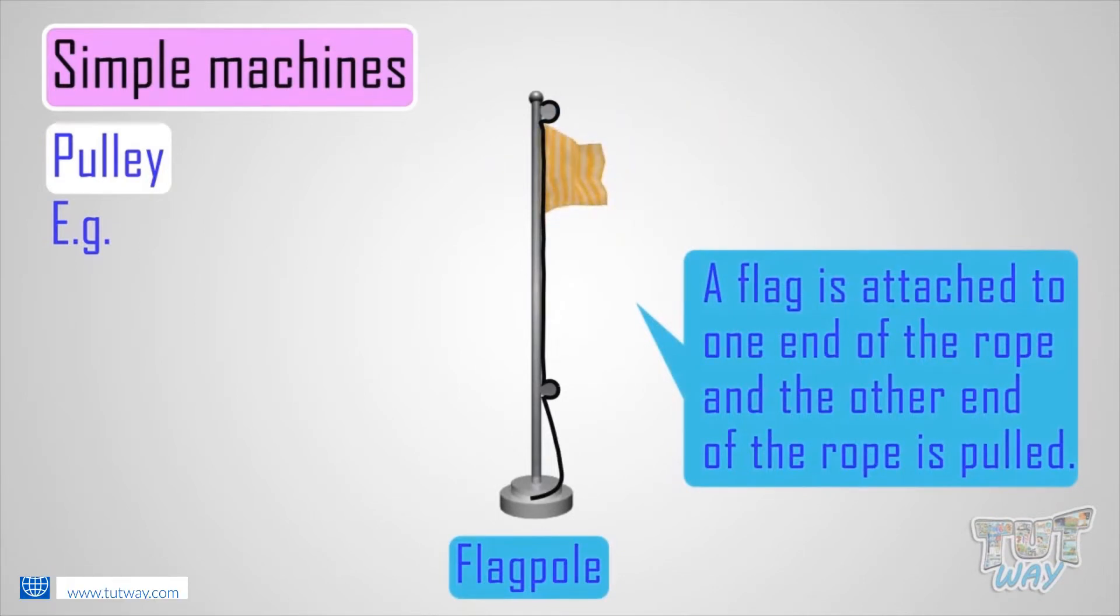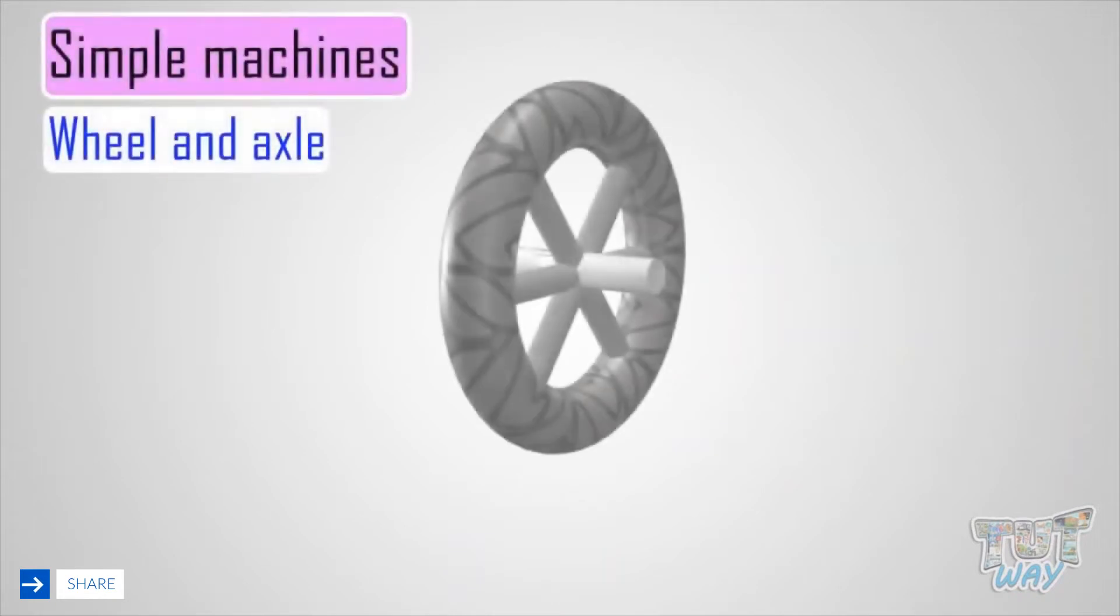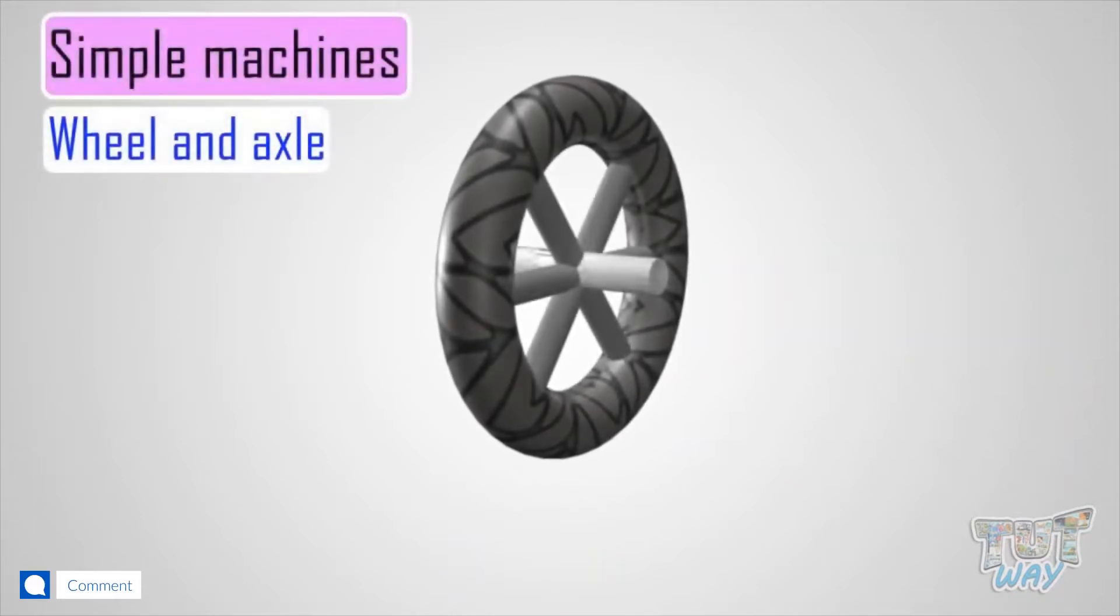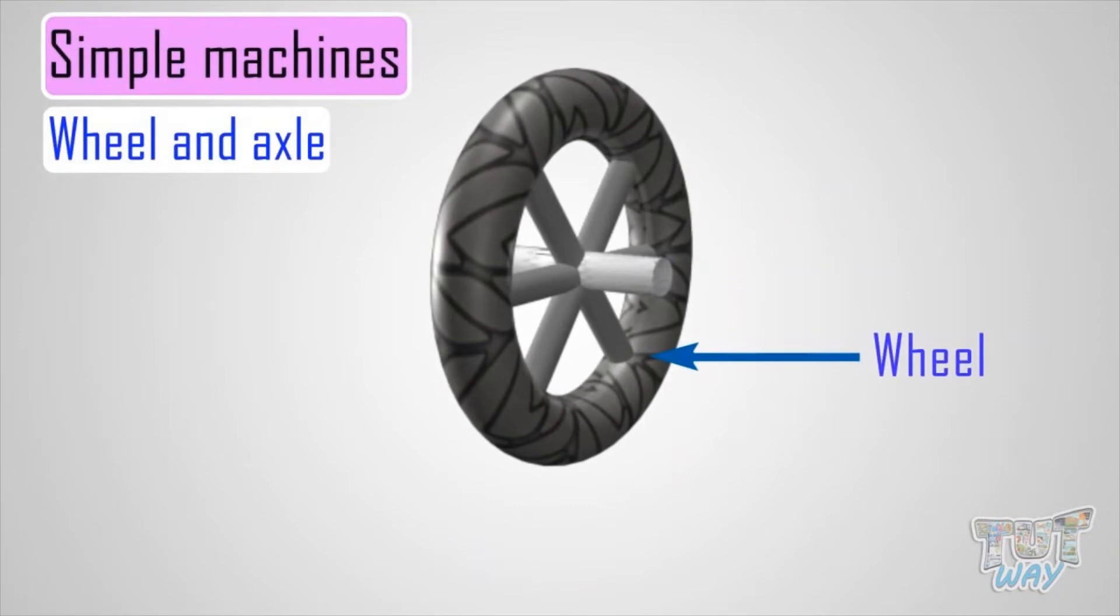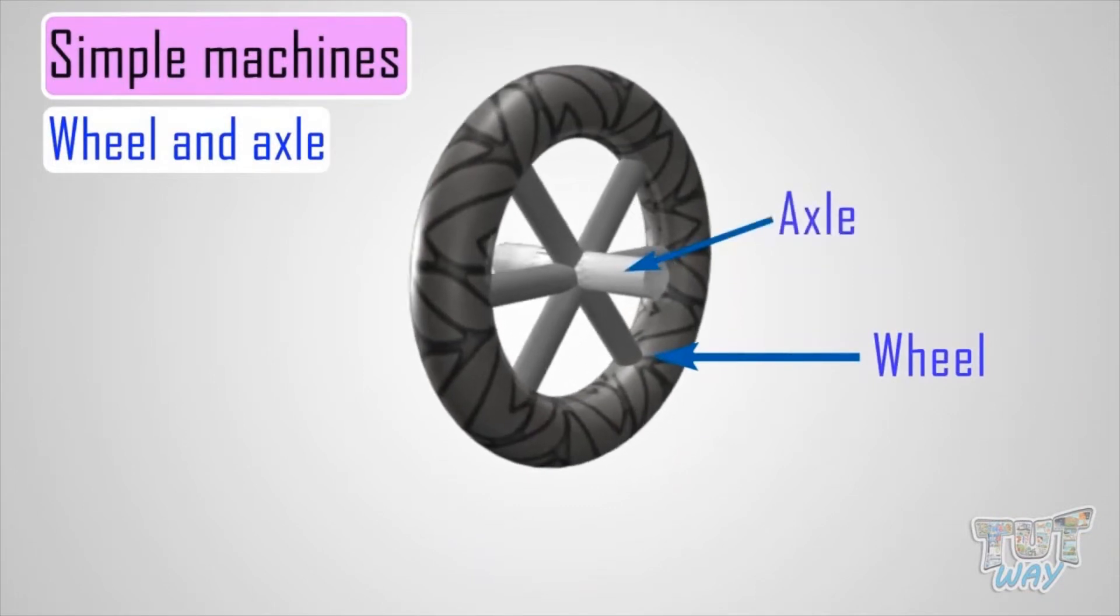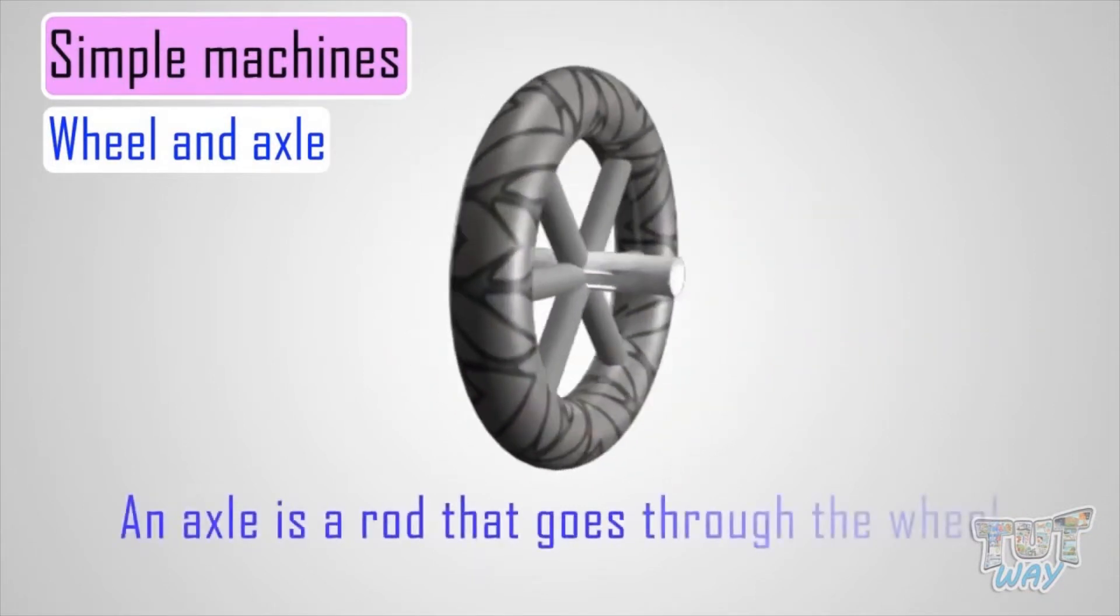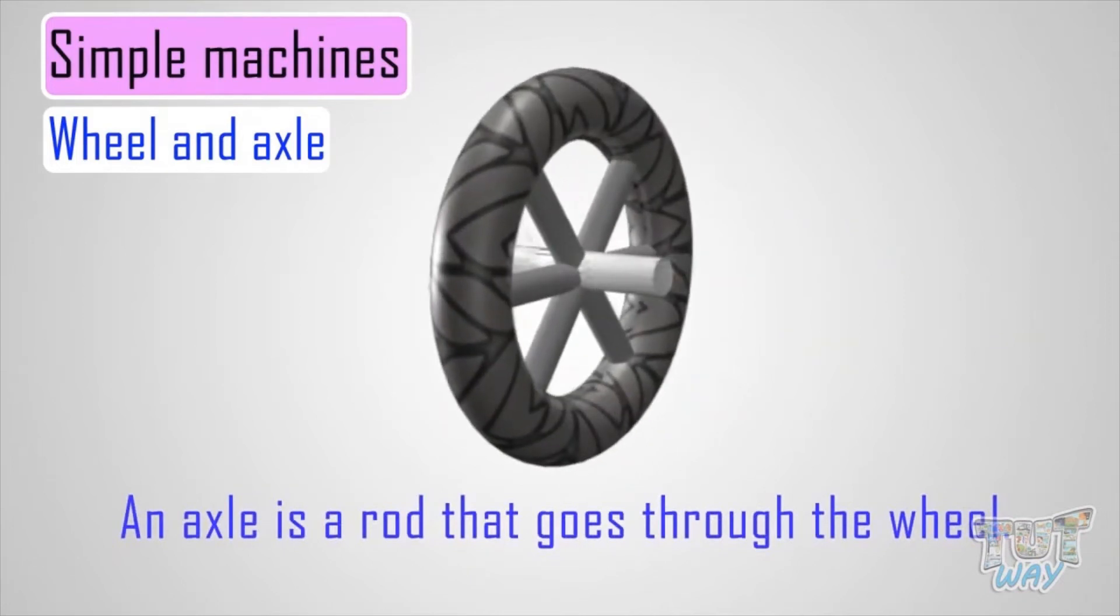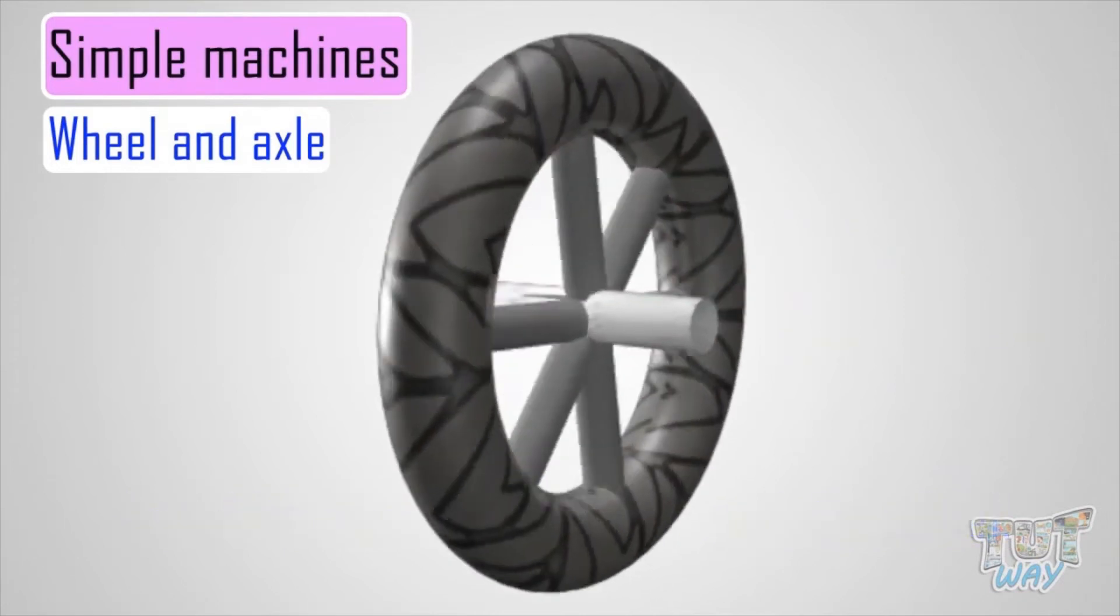Now let's learn about another simple machine, which is a wheel and axle. This is a wheel attached to an axle, and the axle is a rod that goes through the wheel. This lets the wheel turn.